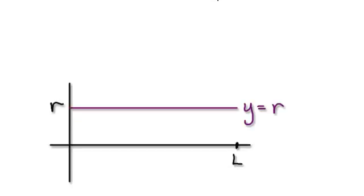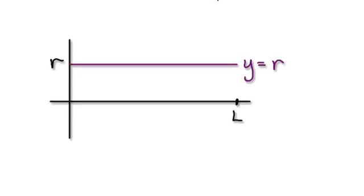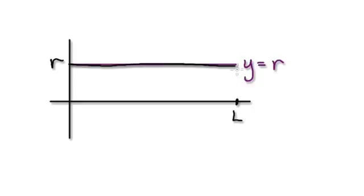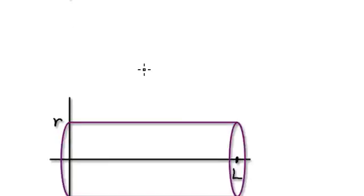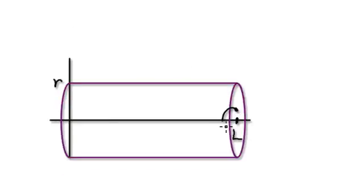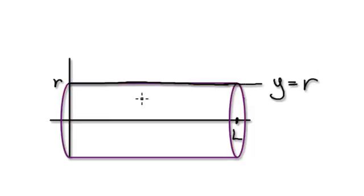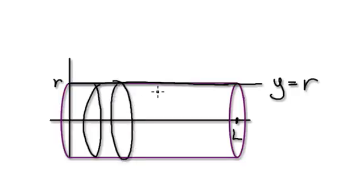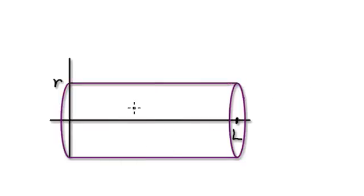Let's give you some more practice — use your newfound technique of integration to work out the formula for the volume of a cylinder. All that you're given is a straight line y equals r. From this line you can create a cylinder by rotating it all the way through. From that straight line y equals r, we can sum up all the disks.